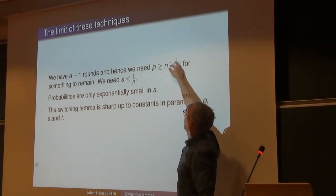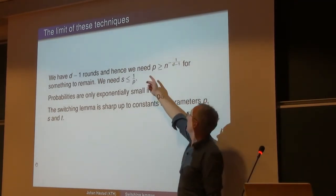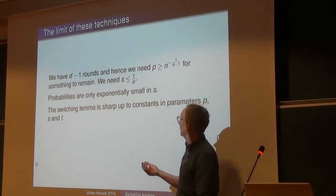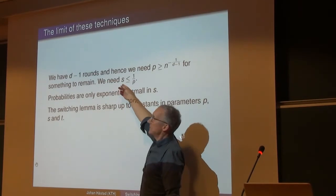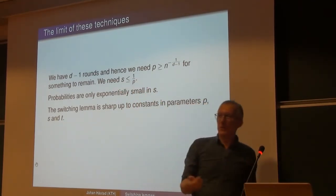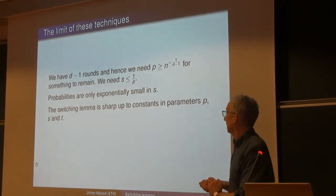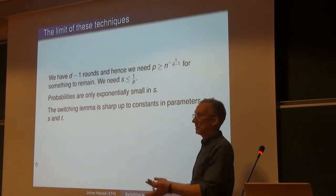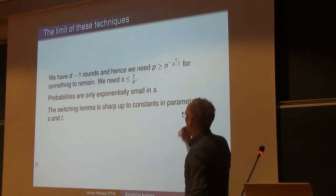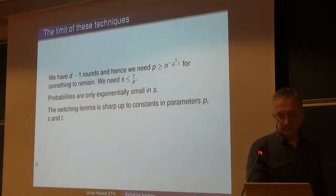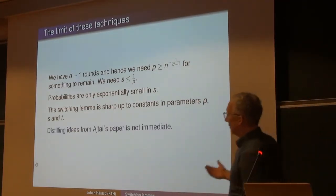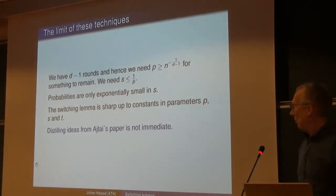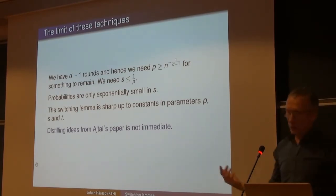You need something to remain, so if you're going to take D-1 rounds you can't make p too small. S has to be smaller than 1/p, otherwise the switching lemma statement is hopeless. The bounds are sharp — there are simple examples showing this. So if you want something better you'd have to look at other methods, which I didn't have the energy for at the time. Then the problem sat for 30 years.